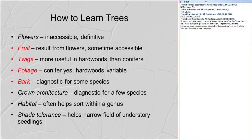When learning trees, we'll focus on fruit, twigs, foliage, and bark. Other things that can sometimes be useful — and we'll mention on occasion — are flowers, crown architecture, habitat, and shade tolerance. Those all have utility, and it's handy when thinking about ecology to understand a species' shade tolerance or habitat, though it may or may not always help with identification.